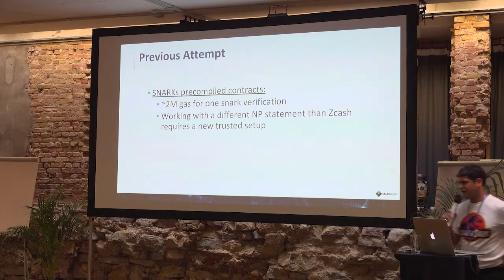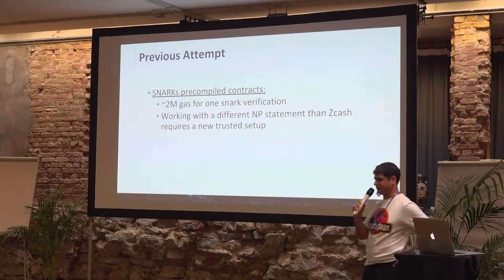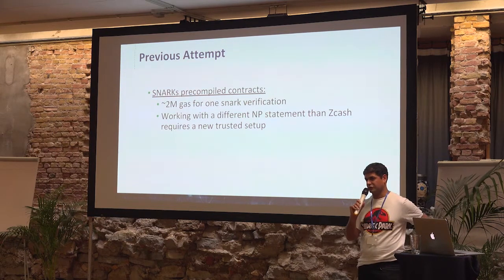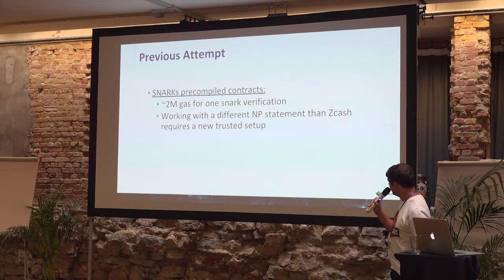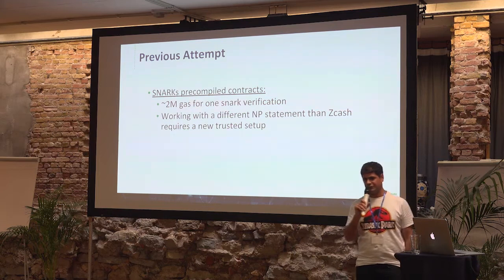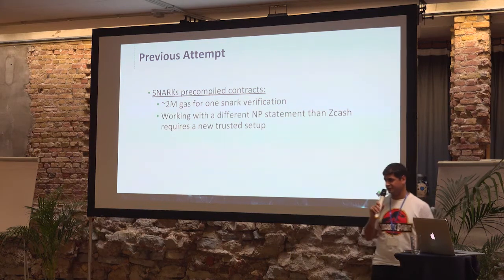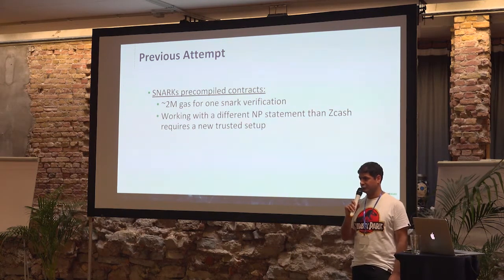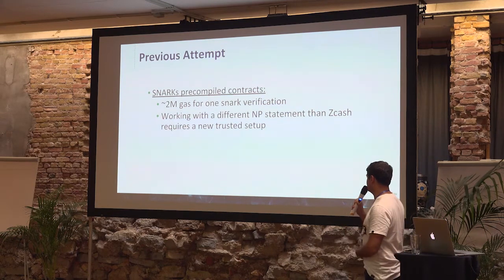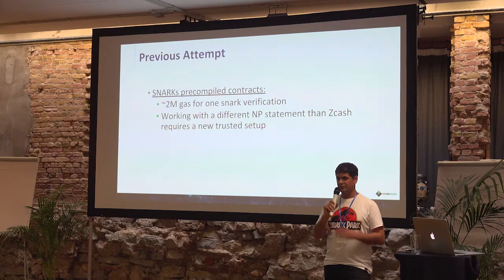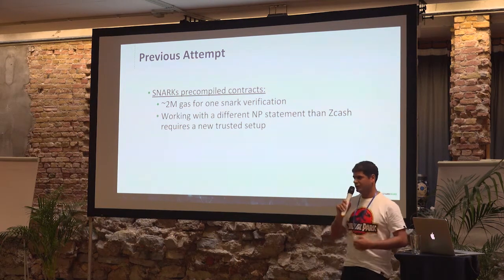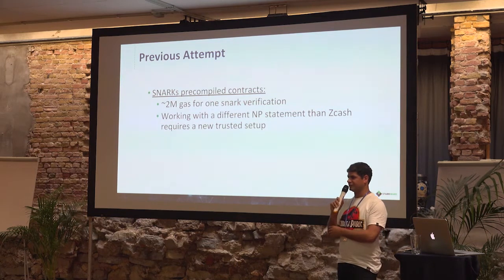If you want to implement shielded transactions on top of this, you have two main problems. The first one is that to do one SNARK verification takes about two million gas, so you wouldn't get far with your throughput. The second one is that if you want to change the NP statement, SNARKs basically need a trusted setup.